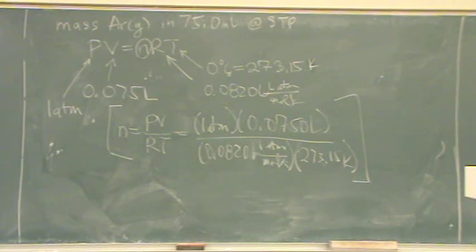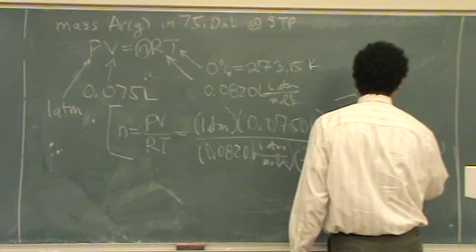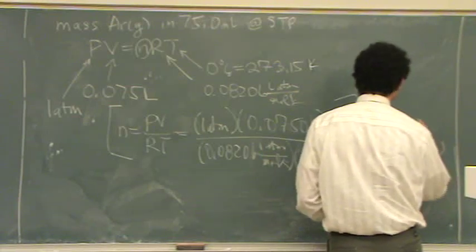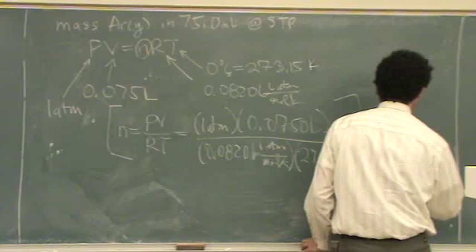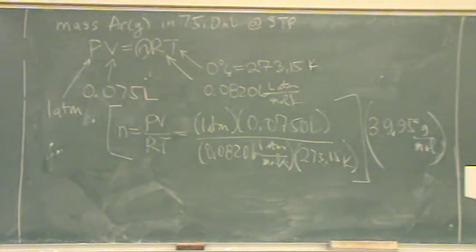Since we're being all precise here, I'll go to 39.95, but normally I just use 40 grams per mole. And that will convert moles to grams. Is that okay for the first one?